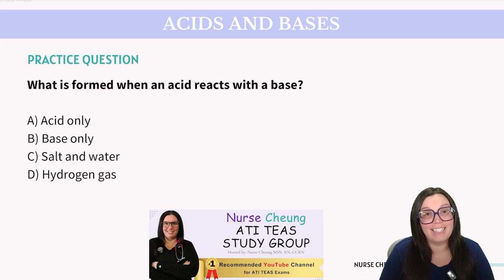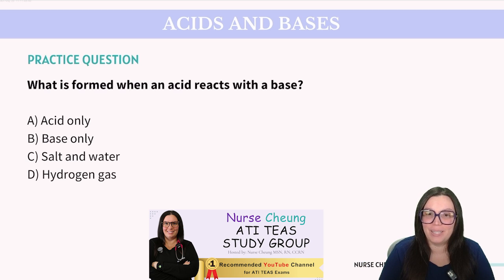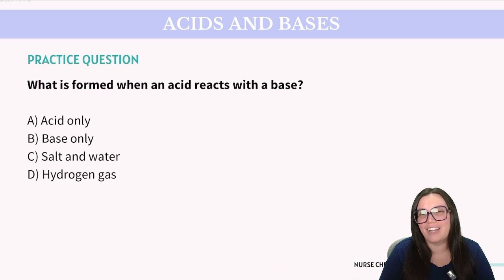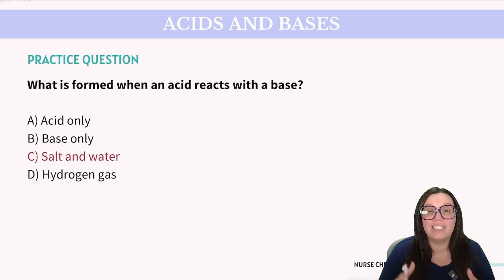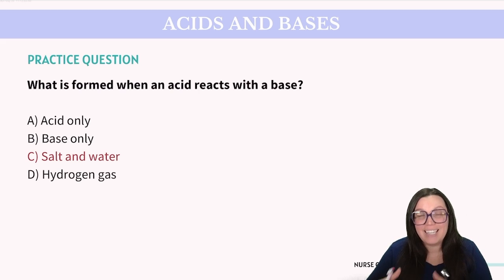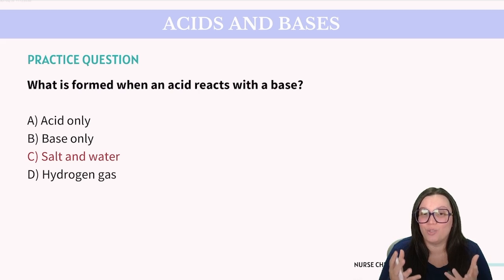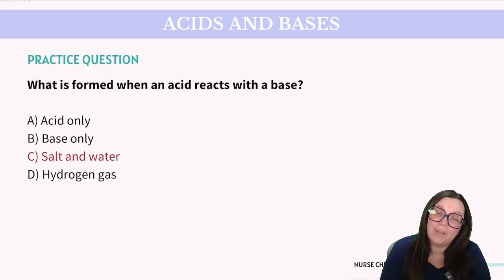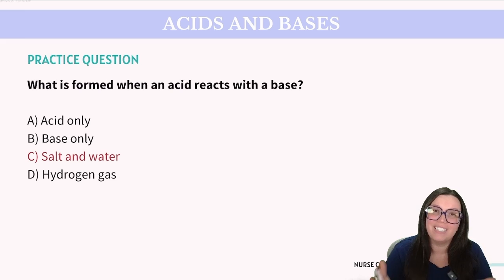Question: What is formed when an acid reacts with a base? Is it acid only, base only, salt and water, or hydrogen gas? The correct answer is C — salt and water. Remember the neutralization reaction: when an acid and a base react, it is known as a neutralization reaction, and it typically produces salt and water.